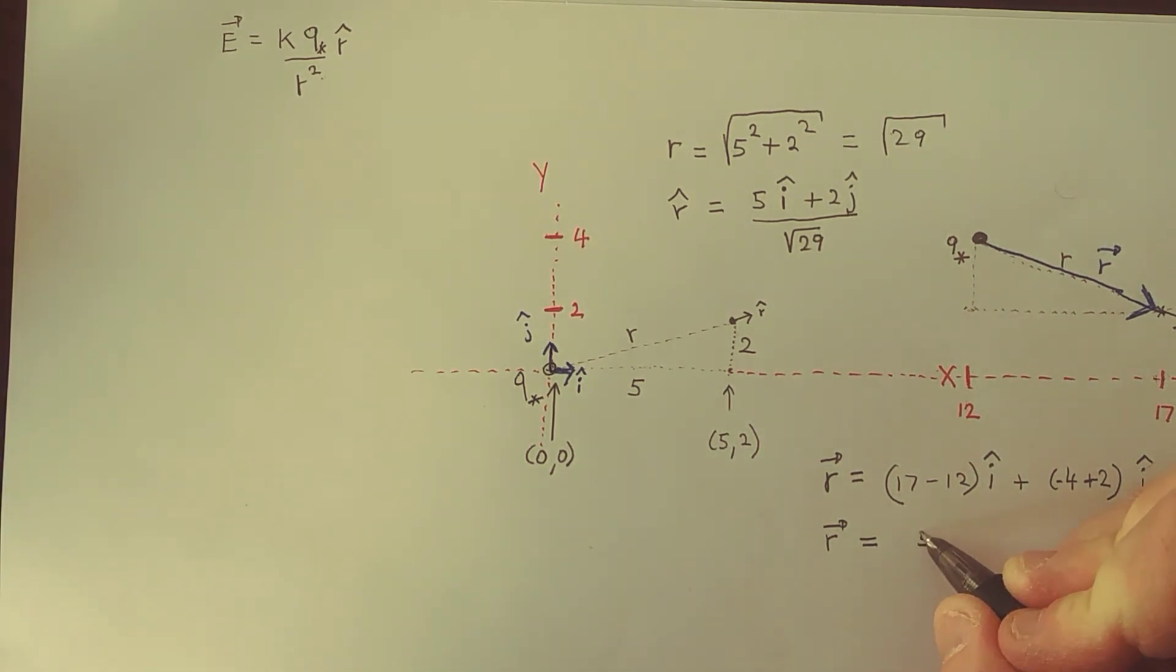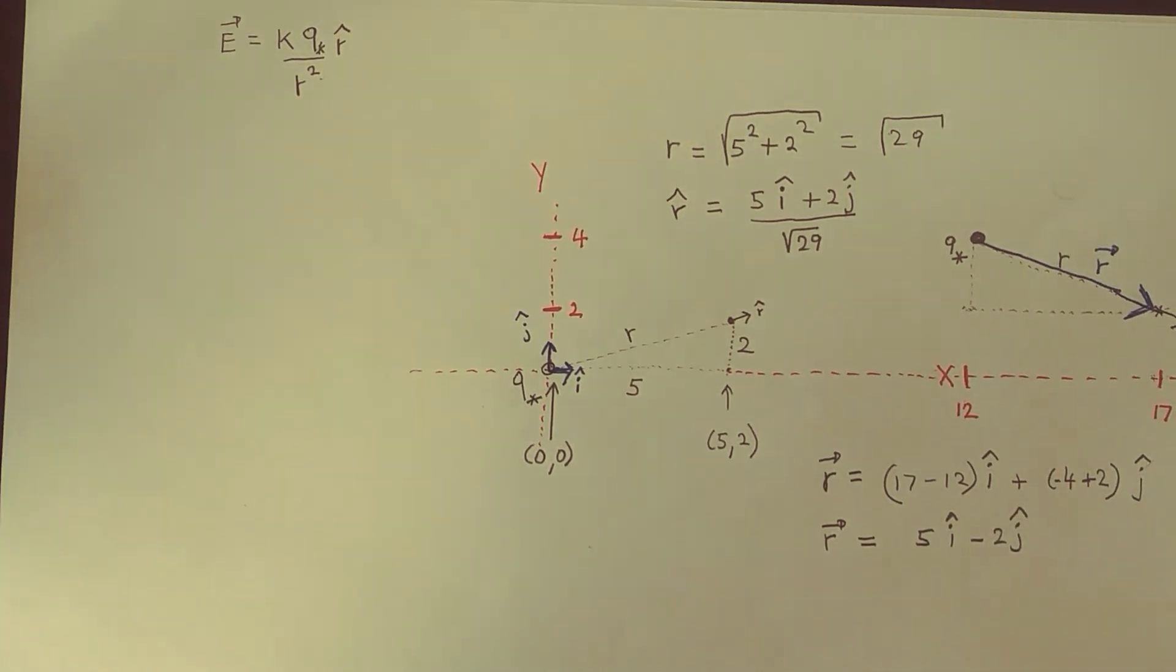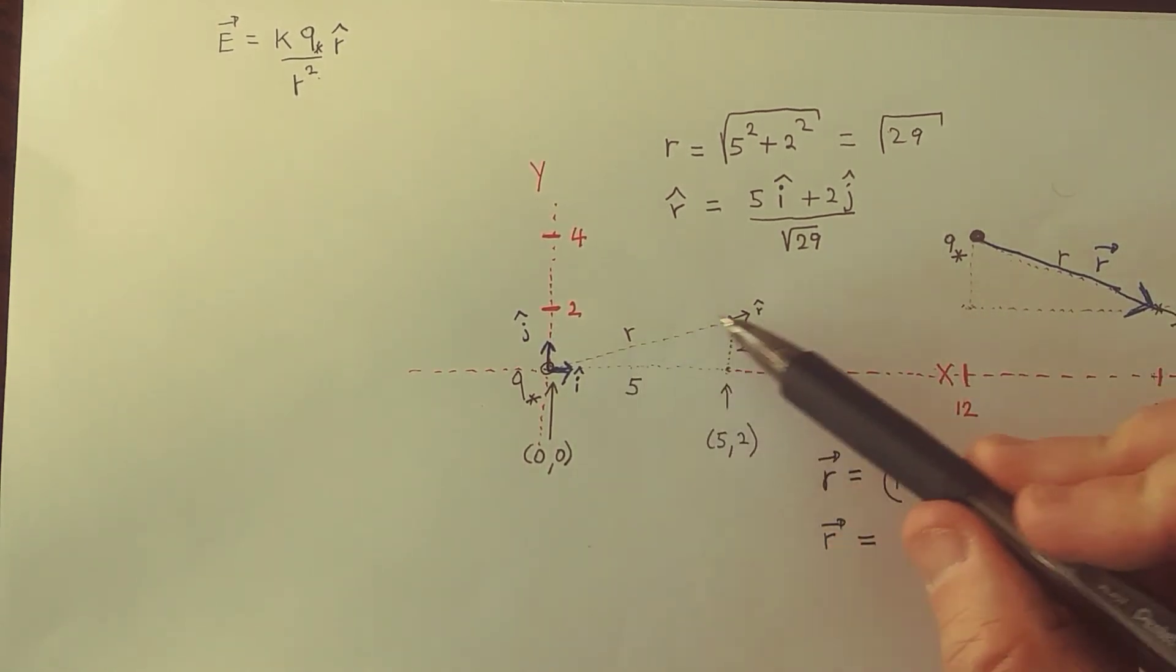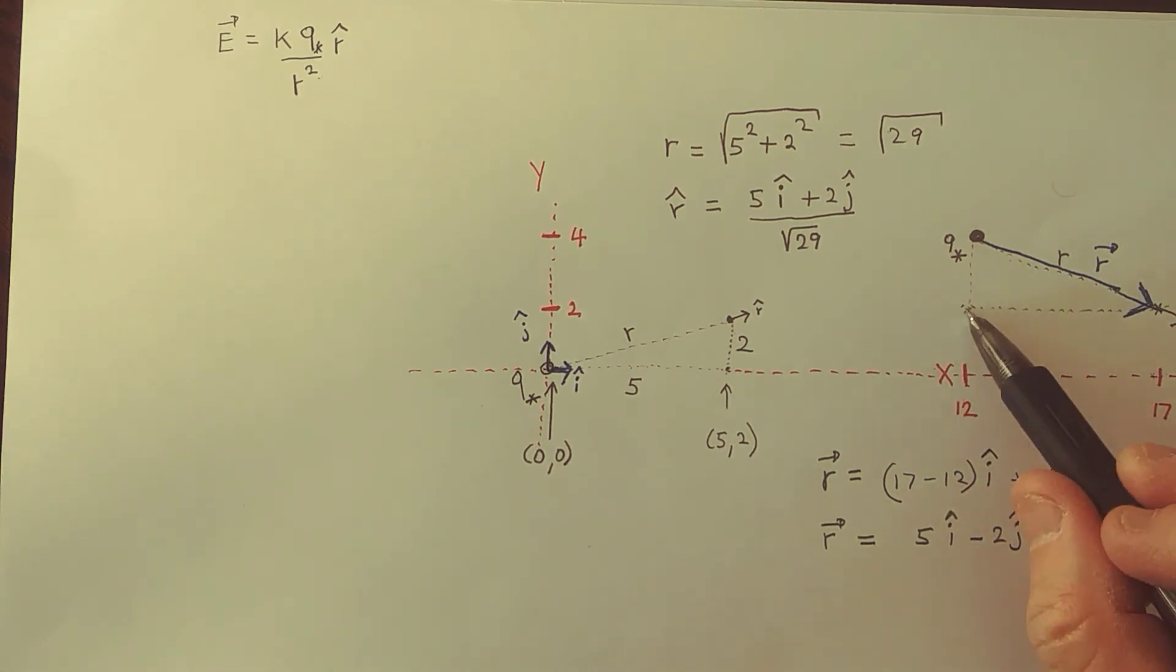So it has components 5 i hat, and the component in the vertical direction is minus 2, so we have minus 2 j hat. But by Pythagoras theorem, the length of this vector is again the same as this one, because this length, the horizontal part, is 5, and the vertical is 2.